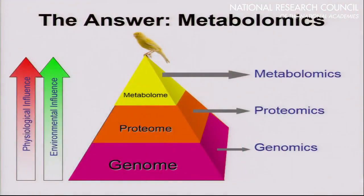To think of the metabolome: it caps off this pyramid of life where the genome codes for the proteome, and the proteome in turn manipulates or alters the metabolome. I've drawn a canary at the top of this pyramid to indicate that metabolites are the canaries of the genome — a small change in the genome, a perturbation in the epigenome or proteome, is amplified to the point where it's easily detected.